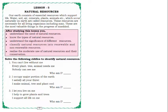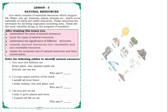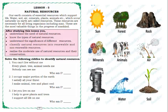Natural Resources. Our earth consists of essential resources which support life. Water, soil, air, minerals, plants, animals, etc., which occur naturally on earth are called natural resources. So, the resources we get from nature — this type of resources are called natural resources.